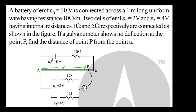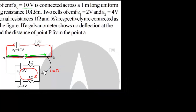In the primary circuit, current will flow in this direction. We have to find the current and the potential gradient. The resistance is 10 ohm as given. Current will be 10 volt upon 10 plus 10, that is 20 ohm. So current is 0.5 ampere in the primary circuit.